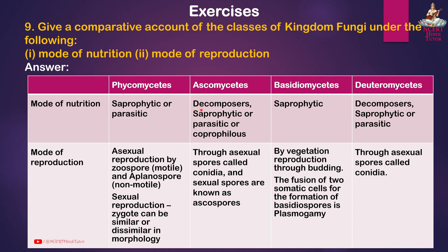Ascomycetes — mode of nutrition: decomposes, saprophytic, parasitic, or coprophilous; mode of reproduction: asexual spores called conidia, and sexual spores known as ascospores. Basidiomycetes — mode of nutrition: saprophytic; mode of reproduction: vegetative reproduction through budding; fusion of two somatic cells for formation of basidiospores (plasmogamy).